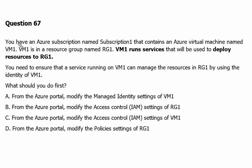Question number 67. You have an Azure subscription named Subscription1 that contains an Azure virtual machine named VM1. VM1 is in a resource group named Resource Group 1. VM1 runs services that will be used to deploy resources to RG1. You need to ensure that the service running on VM1 can manage resources in Resource Group 1 by using the identity of VM1. This is very important — we have to understand the concept of identity.